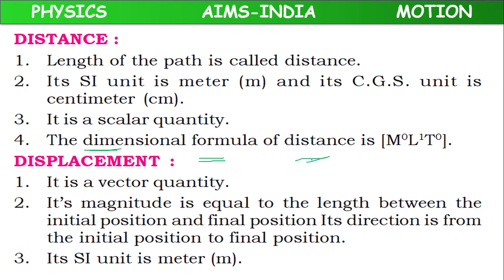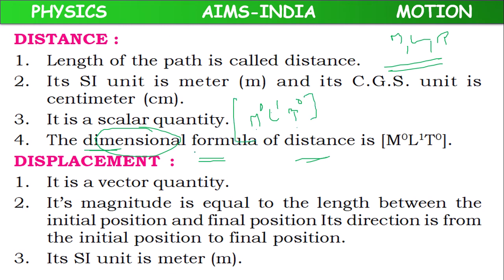The dimensional formula of distance: dimensional formula uses base quantities — mass, length, and time — raised to powers. In distance, there is no mass, only one length, and no time. So the dimensional formula of distance is M⁰L¹T⁰ — zero dimensions in mass, one dimension in length, zero dimensions in time.